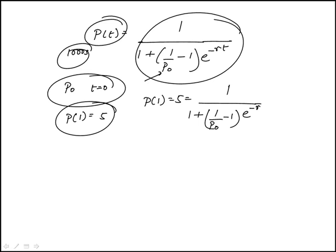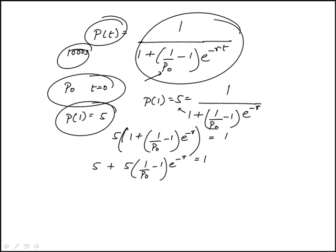So I'm going to cross multiply this. This becomes 5 times 1 plus 1 over P sub 0 minus 1 e to the minus r equal to 1. I'm going to distribute this. 5 plus 5 times 1 over P sub 0 minus 1 e to the minus r is 1.